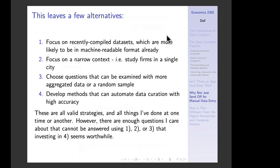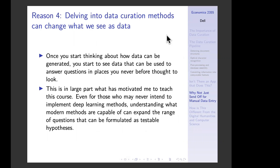Typically the full datasets are too large to digitize manually. This leaves a few alternatives: focus on recently compiled machine-readable datasets, focus on a narrow context, choose questions that can be examined with aggregated data, or develop methods that can automate data curation with high accuracy. These are all valid strategies, but because there are questions that you really can't get out with options one, two, or three, I think option four is worthwhile.